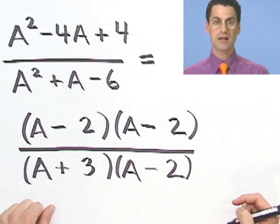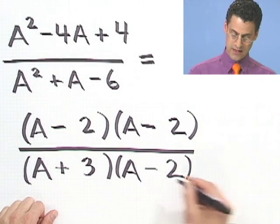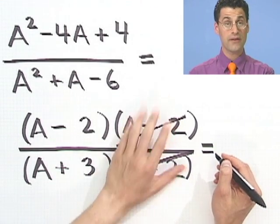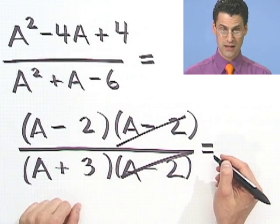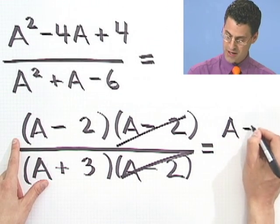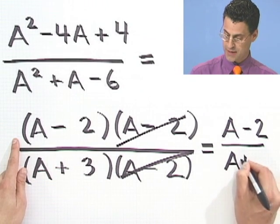Check it. Yep. Good. OK. So now, what do I see? I can cancel, right? And if I cancel those common factors, they are factors now, so I can cancel. I'm not violating my classic cancellation mistake. Then I'd have a minus 2 on the top and a plus 3 on the bottom.